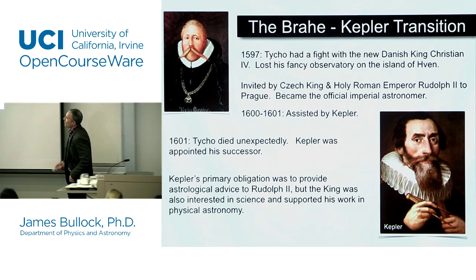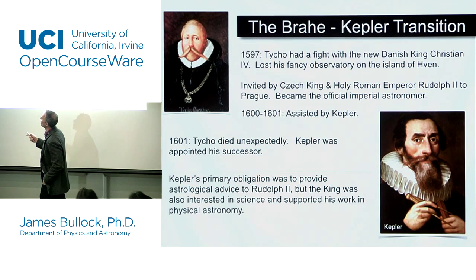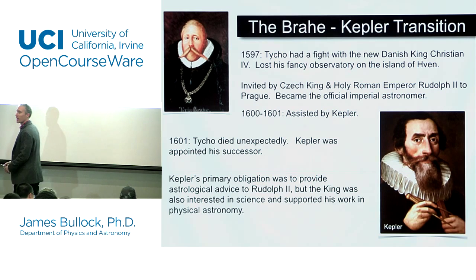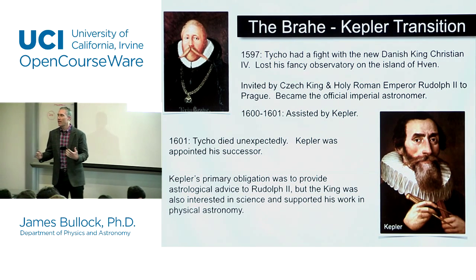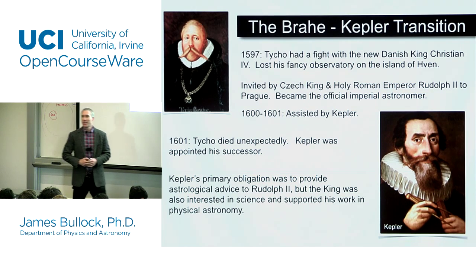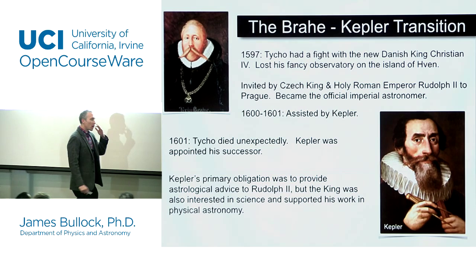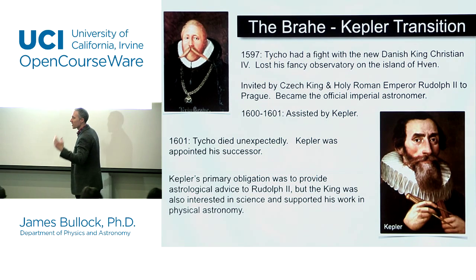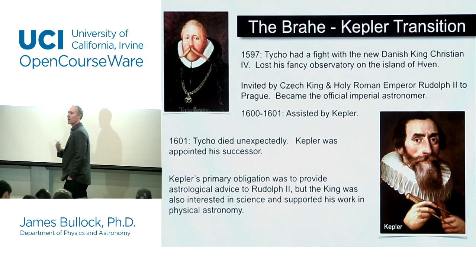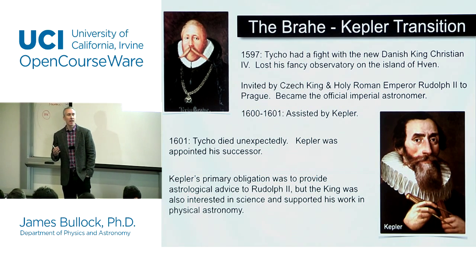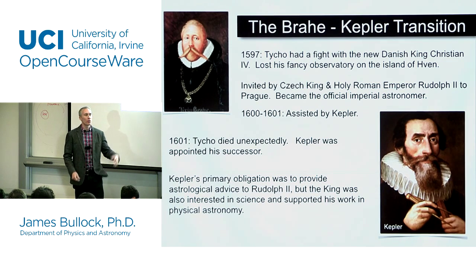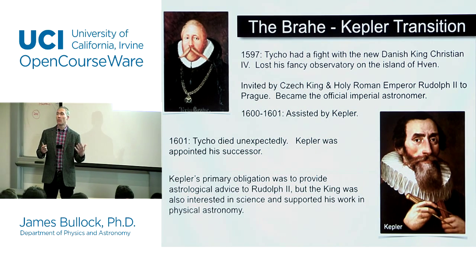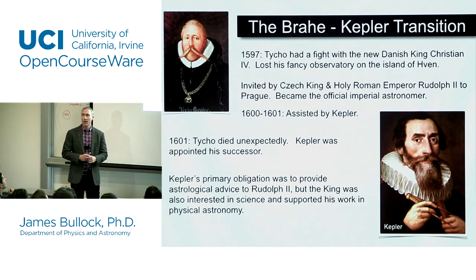So if you recall, there was this guy, Tycho Brahe. This is a painting of him — probably commissioned because his nose isn't metal in it, but he had a metal nose. He was the guy who lost a nose in a sword fight about who the best mathematician was. He was this larger-than-life guy who, basically by luck of the draw, discovered a new star — a supernova — which made him world famous.